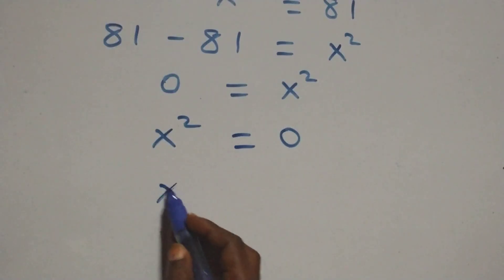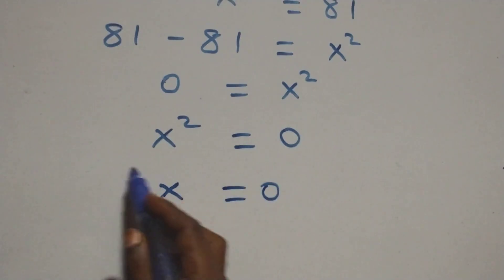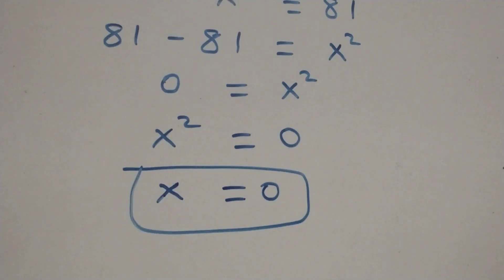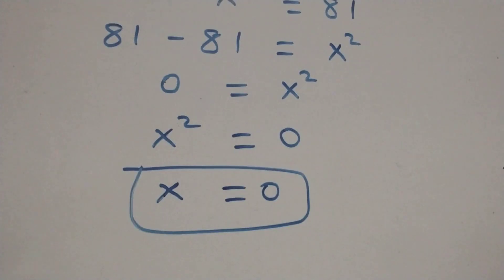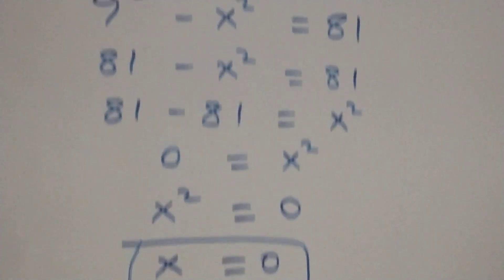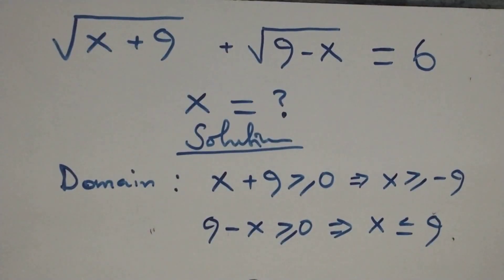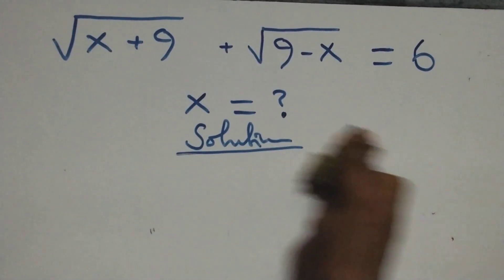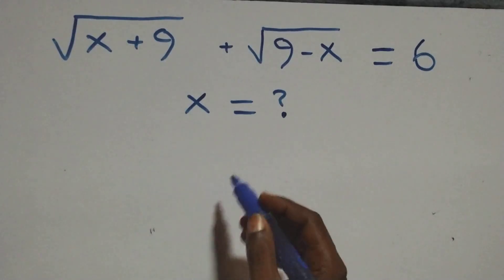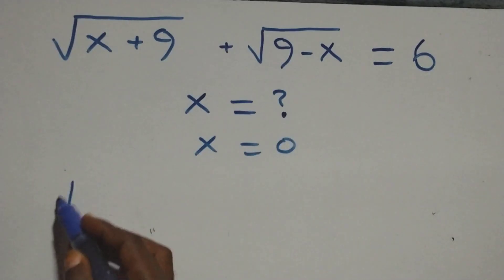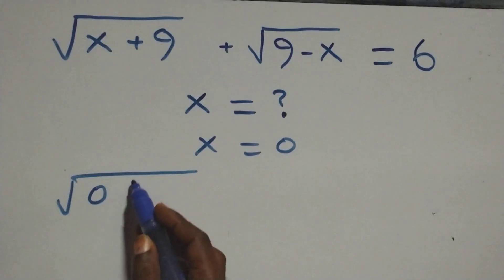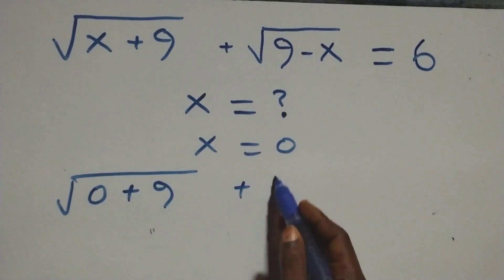Taking the square root of both sides, we still have x equals zero. This is the unique solution to this problem: x equals zero. Now we can verify whether this solution satisfies the given equation. Substituting x equals zero: we get square root of zero plus nine, plus square root of nine minus zero, equals six.